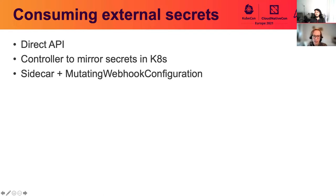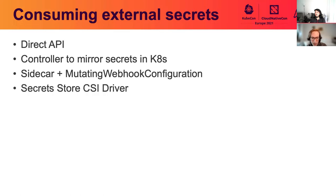You could also use a sidecar to fetch and write secrets. The sidecar may be injected using a mutating webhook. Here, the pod identity would be used to fetch the secrets, but the sidecar and the webhook may add additional operational complexity that you're not prepared for. Finally, there's the Secret Store CSI driver, which uses the container storage interface specification that we're going to talk about today, and we'll cover some of the features that make it a good fit for consuming external secrets on Kubernetes.